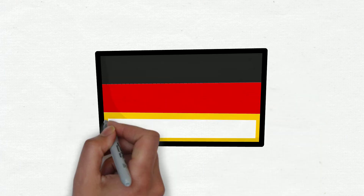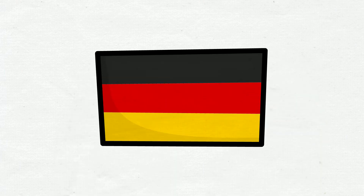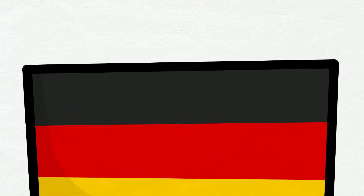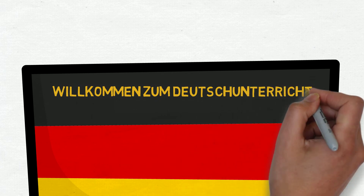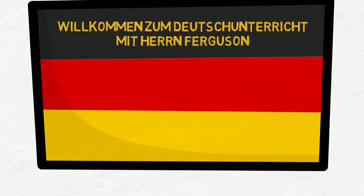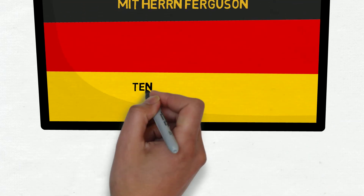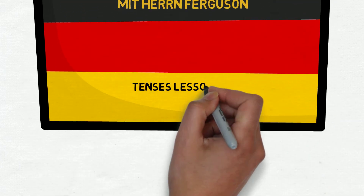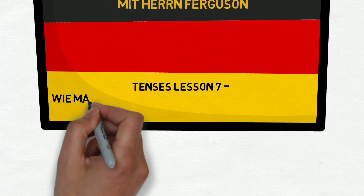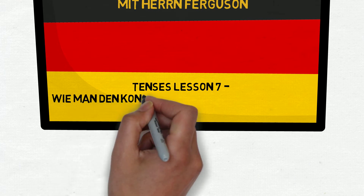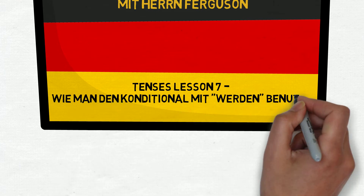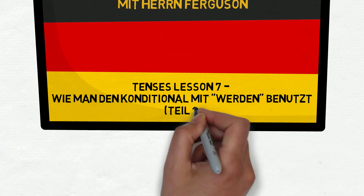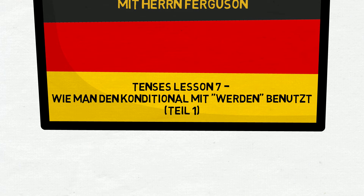Hello and welcome to German Lessons with Mr. Ferguson. Hallo und herzlich willkommen zum Deutschunterricht mit Herrn Ferguson. Diese siebte Stunde über die Zeitformen — the seventh tenses lesson — ist wie man den conditional mit werden benutzt. How to use the conditional tense with werden.